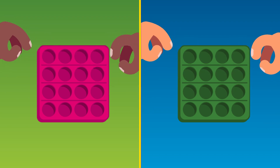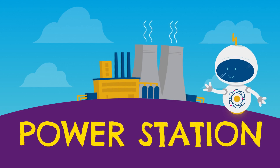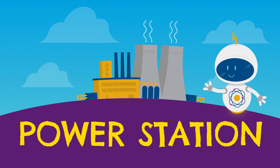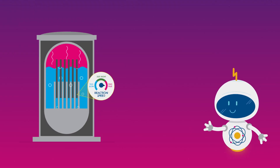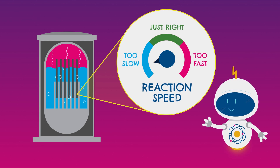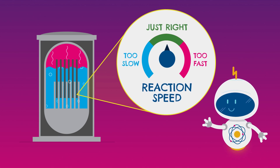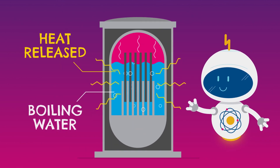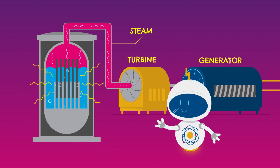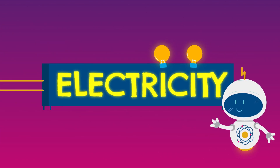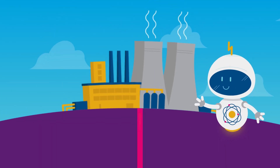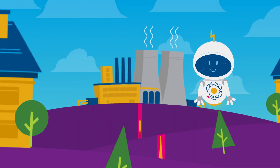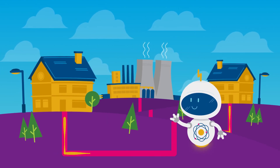Nuclear energy is made in a power station, where fission happens inside a reactor. The reactor controls the speed of the chain reaction to make just the right amount of heat needed. The heat released by the fuel boils the water, making the steam that turns the turbine, generating electricity, which is sent through cables into our homes, ready for us to use every time we need it.